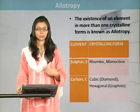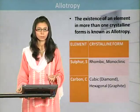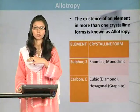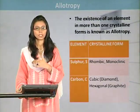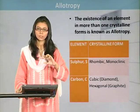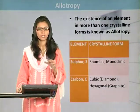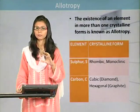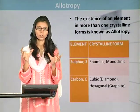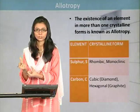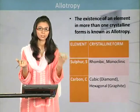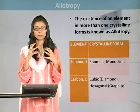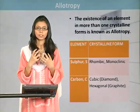Carbon's allotropic forms — you will be very much familiar — are diamond and graphite. There is also one added in the 10th class scope: the buckyballs system. But here, we discuss graphite and diamond. These are two distinct types of allotropic forms of carbon. If you compare them, diamond is a compact structure, whereas graphite is a slippery solid. This is why we compare these properties and shapes.